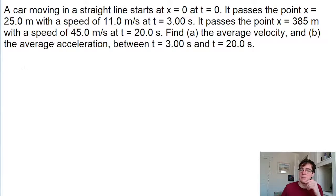This problem throws a lot of numbers at us, but fortunately it's conceptually pretty simple. Part A asks for the average velocity of the car between these two points in time, and we're given the car's positions and speeds at both of those times.